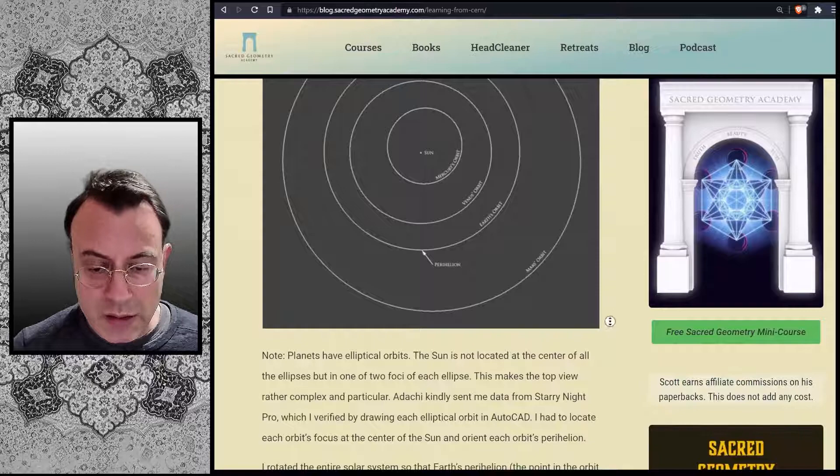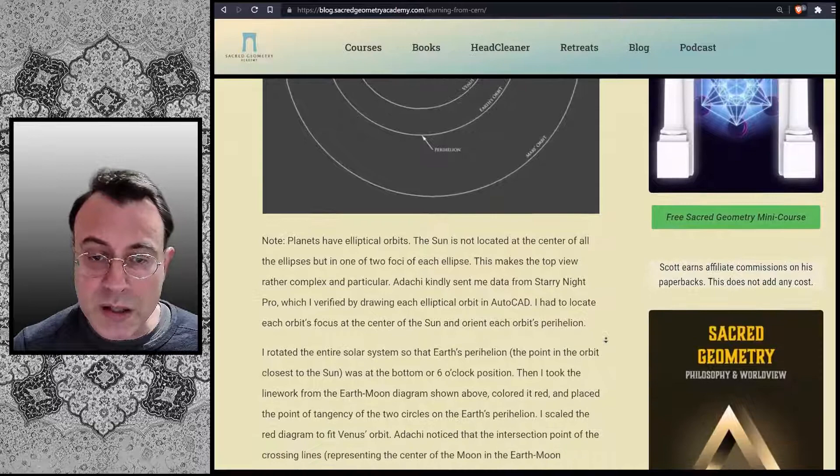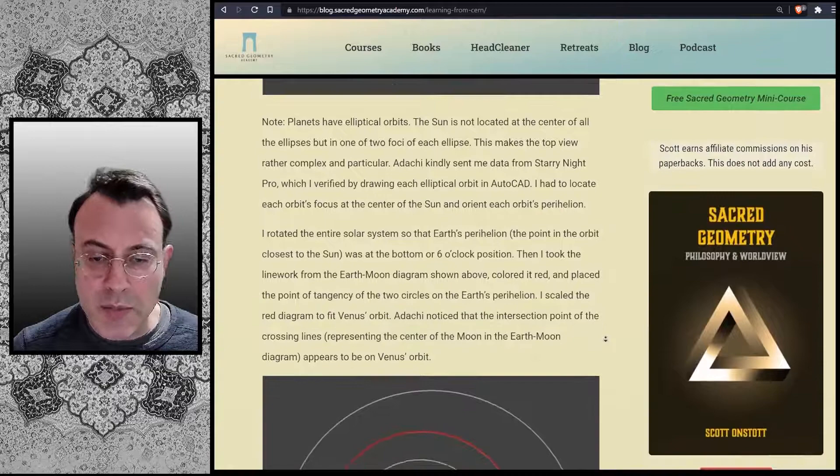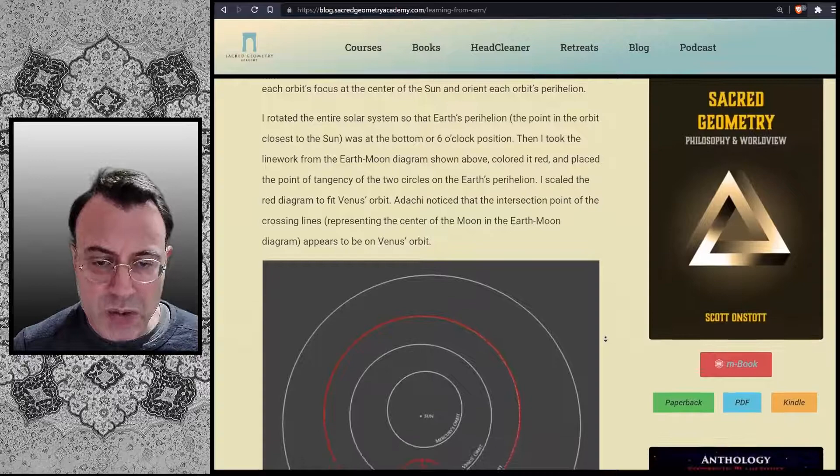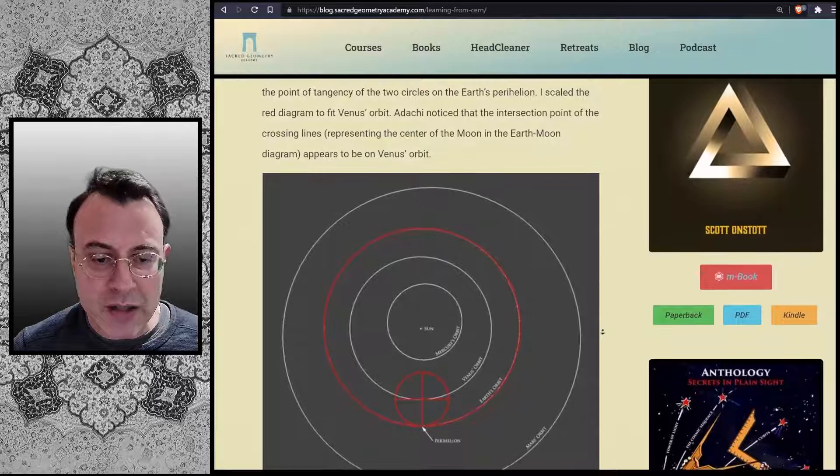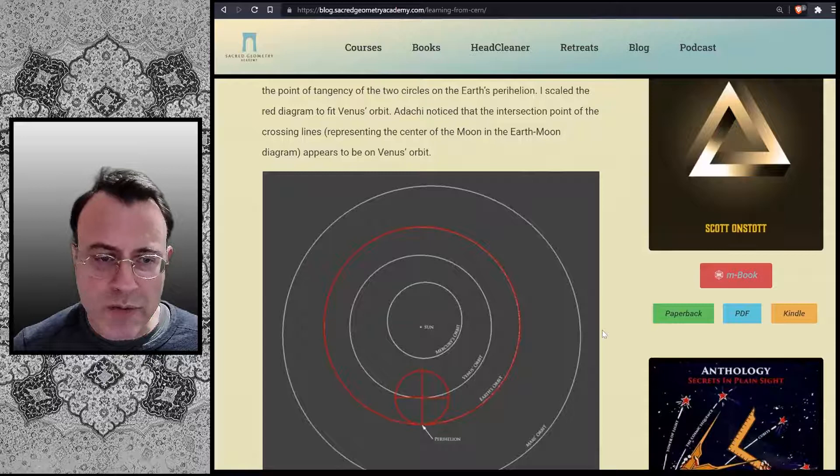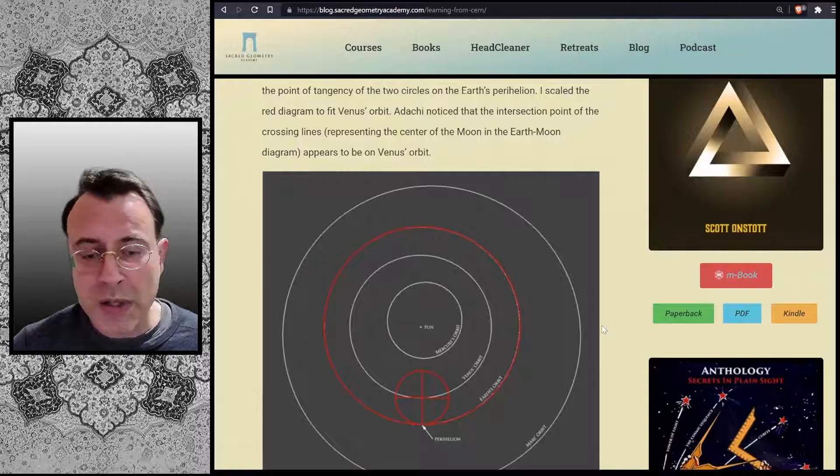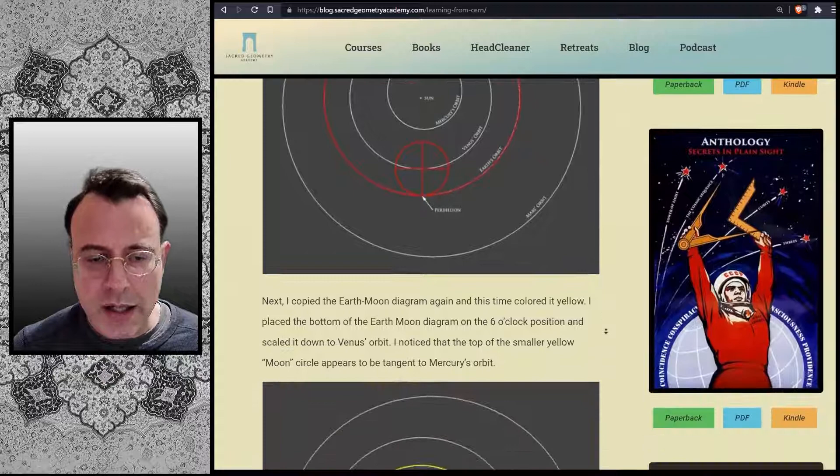I rotated the entire solar system so that the Earth's perihelion, which is the point in the orbit closest to the Sun, was at the bottom or 6 o'clock position. Then I took the line work from the Earth-Moon diagram shown above and colored it red, and placed the point of tangency of the two circles on the Earth's perihelion. I scaled the red diagram to fit Venus's orbit. Adachi noticed that the intersection point of the crossing lines representing the center of the Moon in the Earth-Moon diagram appears to be on Venus's orbit.